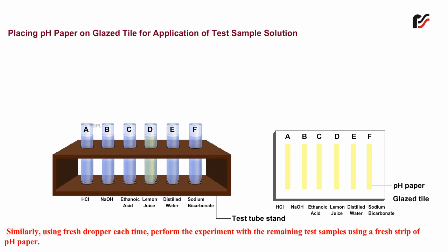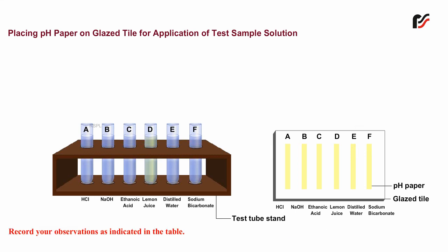Similarly, using a fresh dropper each time, perform the experiment with the remaining test samples using a fresh strip of pH paper. Record your observations as indicated in the table.